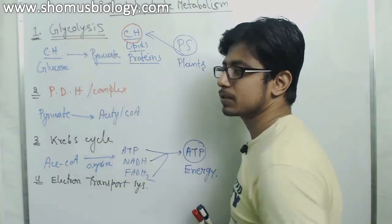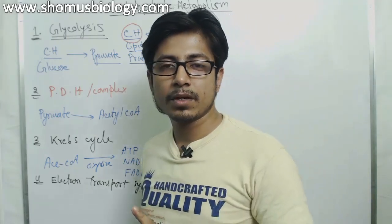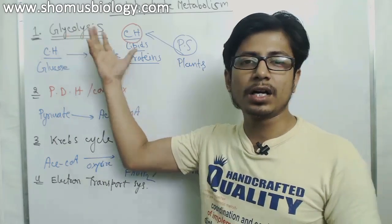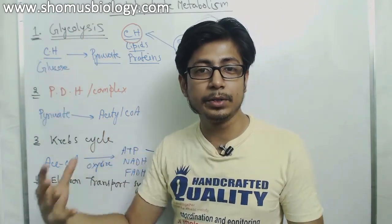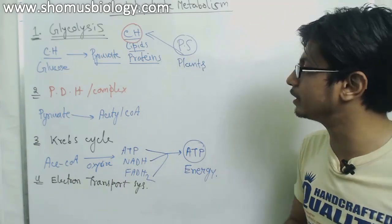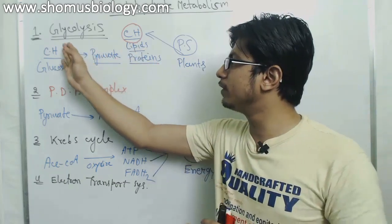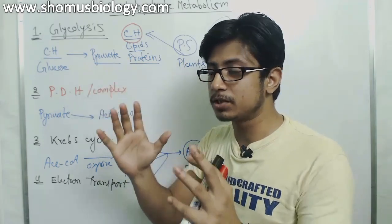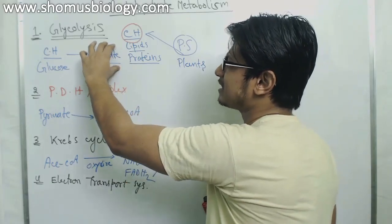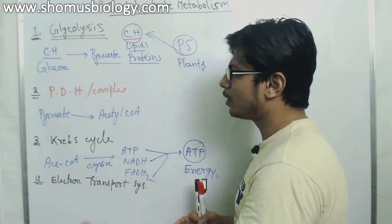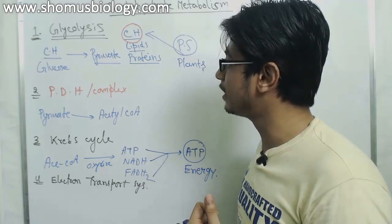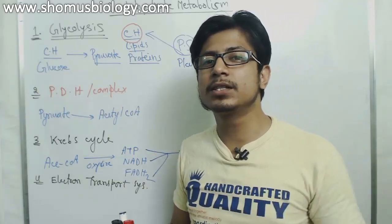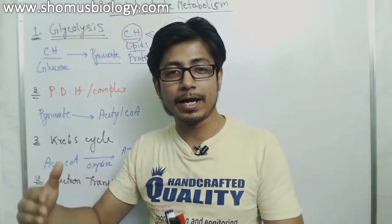Now let's focus on glycolysis. Glycolysis is the very first step of cellular respiration and is kind of the heart of every metabolic process, because it is the starter process where a carbohydrate molecule is taken and converted into the first major intermediate — pyruvate. This pyruvate molecule has several different fates: it can produce energy through the Krebs cycle and electron transport chain, or it can go back and produce glucose if required.